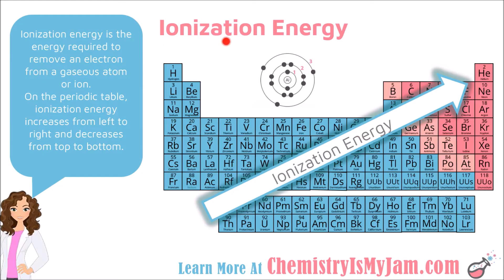Typically, when you just see the term ionization energy, that is talking about removing the first electron from an atom — an electron coming from an outside energy level. In the case of aluminum, the ionization energy refers to how much energy is required to remove that electron. If you remove a second electron, we call it the second ionization energy, and you can have third and fourth ionization energies. But by default, ionization energy refers to removing one electron.